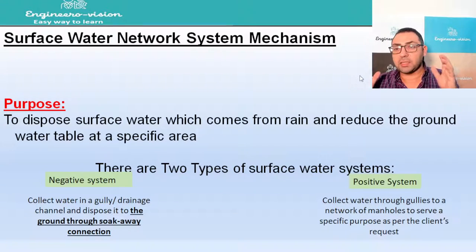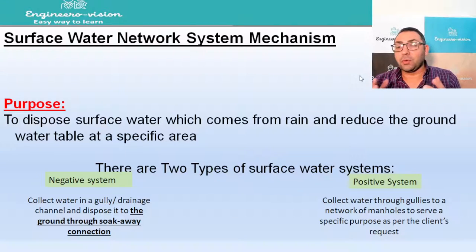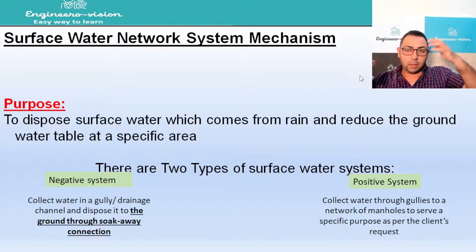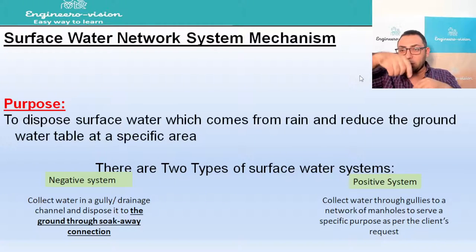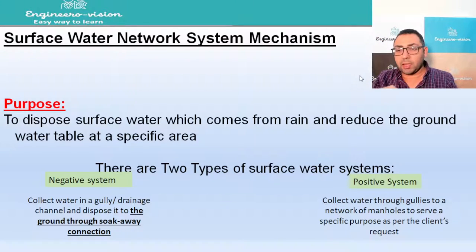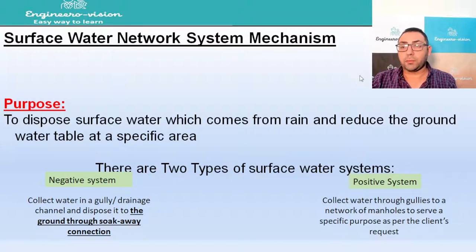The negative system means we don't have a positive network. So how do we dispose of water coming from rain? We have galleys, and these galleys take that water to something called a soak away. A soak away is a manhole — either with perforated rings that dispose the water to the surrounding ground, or if the soil around is rock, we put an additional hole inside the soak away penetrating all rock layers until reaching normal soil, so we can dispose the water to the soil itself.